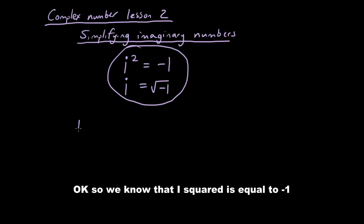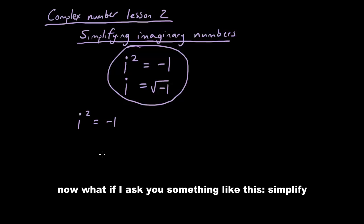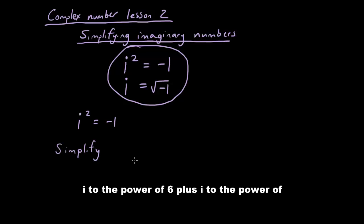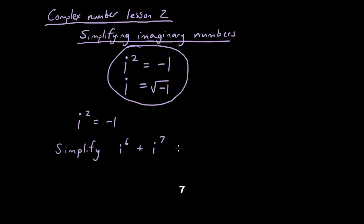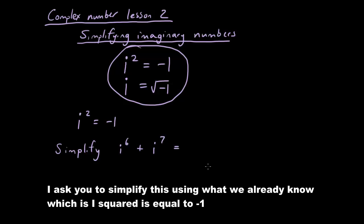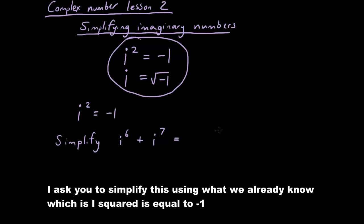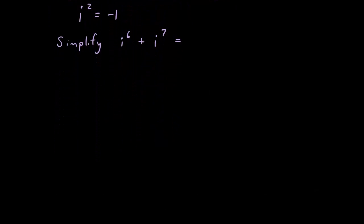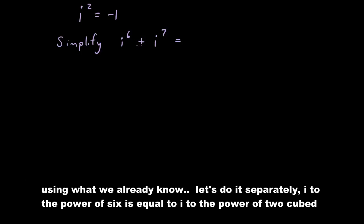So we know that i squared is equal to negative 1. Now what if I ask you something like this — let's simplify i to the power of 6 plus i to the power of 7. I'm asking you to simplify this using what we already know, which is i squared is equal to negative 1. So let's try using what we already know.